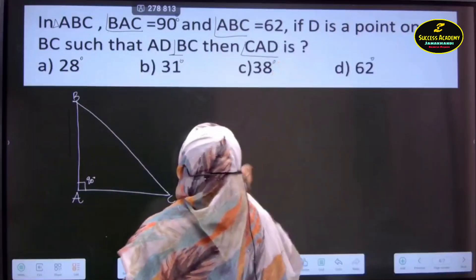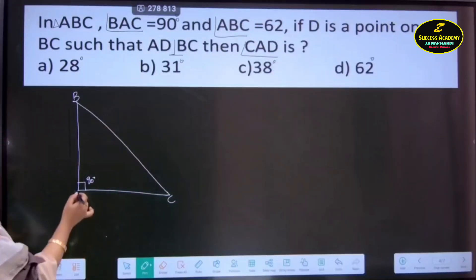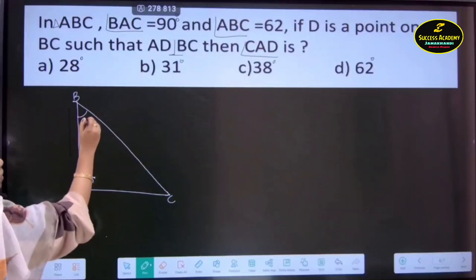Then, angle ABC is how much? 62 degrees. Therefore, A, B and this is C. This will be our 62 degrees.